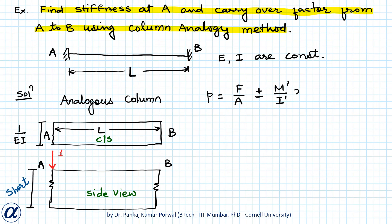Here, F is the resultant of the force acting on the analogous column cross section. A is the area of cross section of the analogous column. M' is the moment due to the load applied on the analogous column about the centroidal axis. Because we have a rectangular cross section, the centroid is at the mid-axis and moment is written about that point. I' is the second moment of area of the cross section, and X is the distance of a point on the column cross section from the centroidal axis.